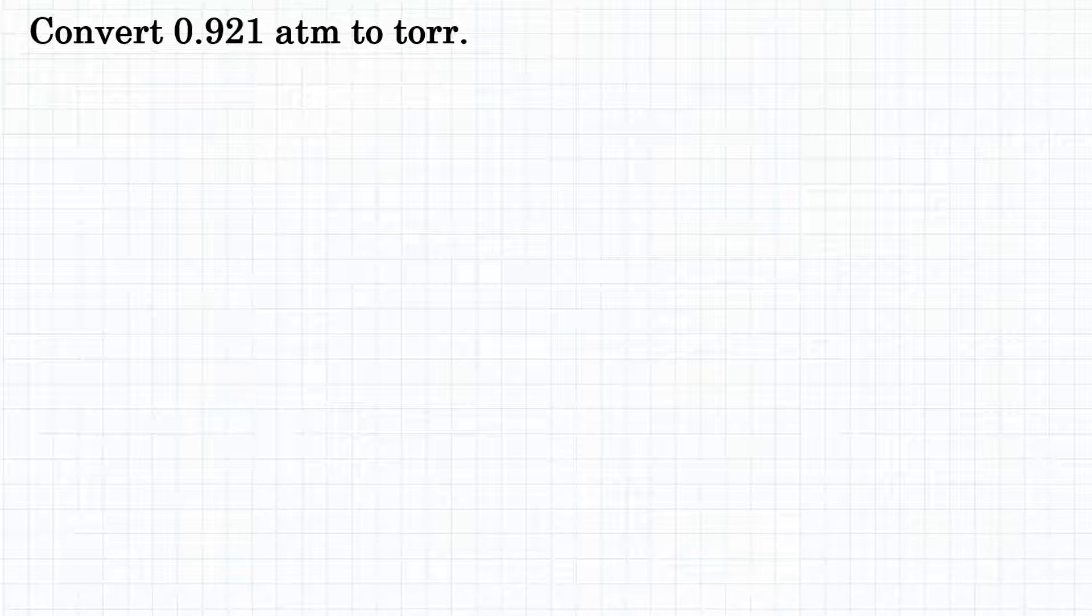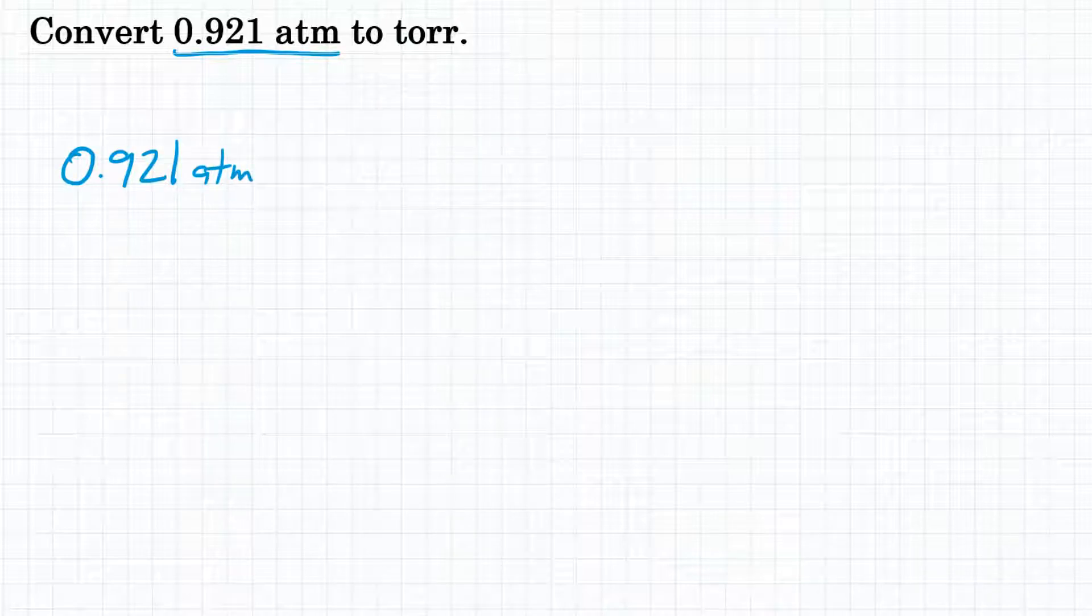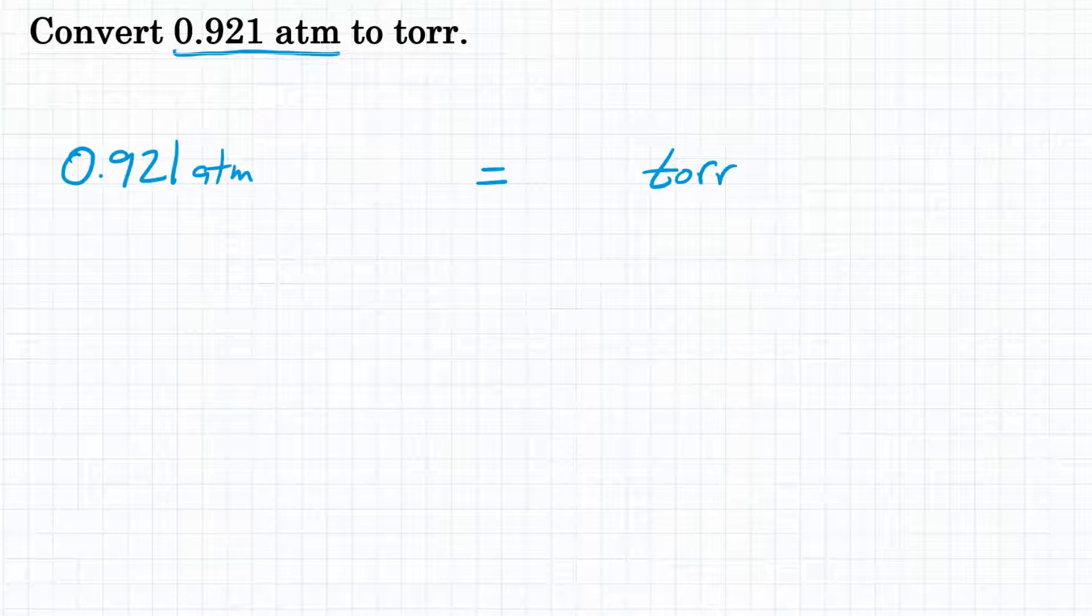We are starting with 0.921 atmospheres, because that is what the problem gives us. So let's write that down, 0.921 atm, or atmospheres. And we want to convert that to torr. So equals so many torr, which is a different unit of pressure.